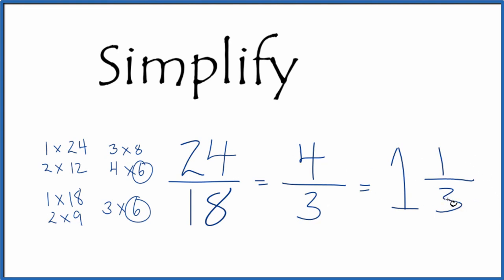You can check that. 1 times 3, that's 3, plus 1 is 4, so 4 thirds, just like we got here. This is Dr. B, simplifying the fraction 24 18ths. Thanks for watching.